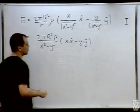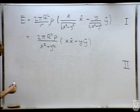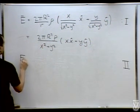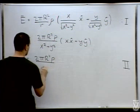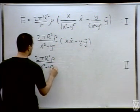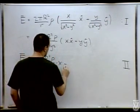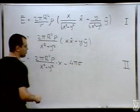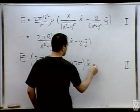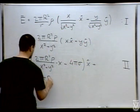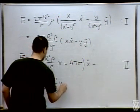באזור 1 זה השדה. באזור 2 יש לנו את אותו שדה של הגליל, אבל עם התוספת של שדה הקבל. אז השדה באזור 2: E = [2πR²ρ/(x²+y²) × x − 4πσ]·x̂ + [2πR²ρ/(x²+y²) × y]·ŷ. (Region 1 field established. Region 2 adds the capacitor field: E_x gets an extra −4πσ term, giving E = [2πR²ρ·x/(x²+y²) − 4πσ]x̂ + [2πR²ρ·y/(x²+y²)]ŷ.)